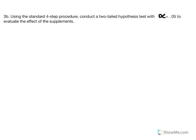Part 3B: using the standard four-step procedure, conduct a two-tailed hypothesis test with alpha equal to 0.05 to evaluate the effect of the supplements. Step one — identifying the hypotheses — was completed in the previous example. We begin with step two, which requires setting the parameters for our study. We're told to conduct a test at alpha equal to 5%, and it's a two-tailed test.